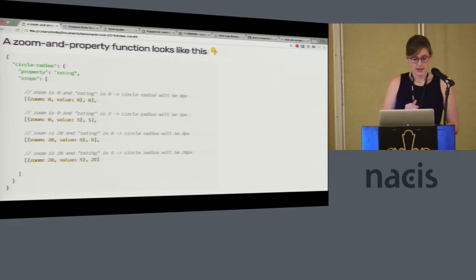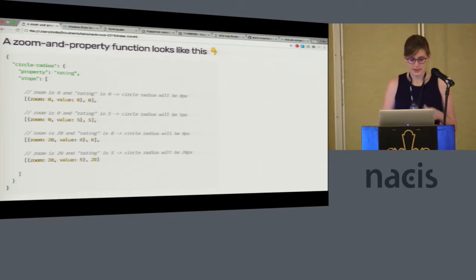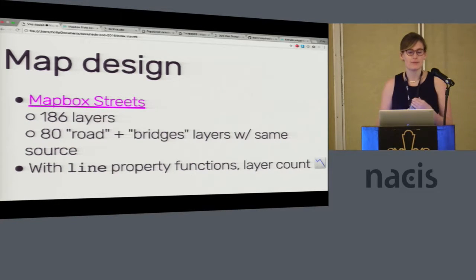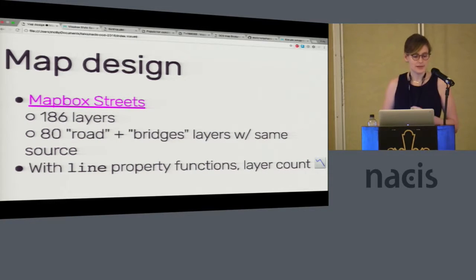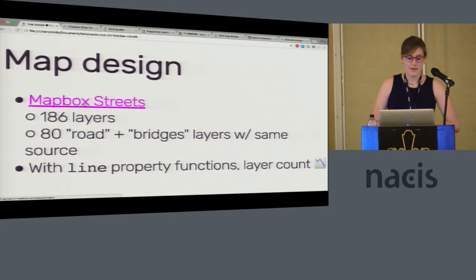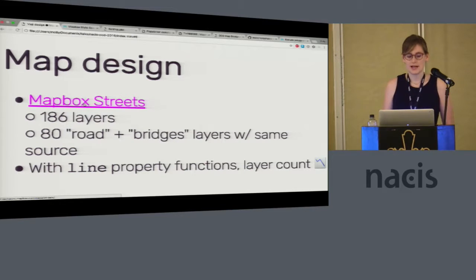You can also do zoom functions, so if you want to change the way your map looks at different zoom levels, that's totally doable. There are a lot of applications for this. The one people think of most is data visualization, but it's also very useful for map design. For example, Mapbox Streets, one of our prebuilt styles, has 186 layers and 80 of those are road and bridge layers with the same source data from OpenStreetMap. Line property functions will allow us to dramatically scale that down and make our styles more performant.